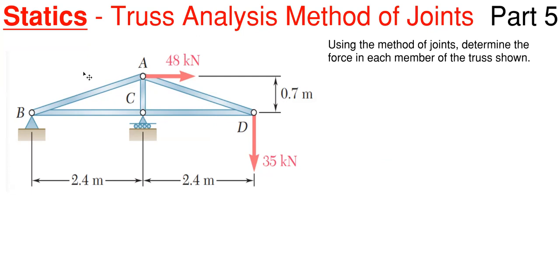We are going to be working with solving each of the members shown on this truss. The first thing you want to do when you're using method of joints is that you want to solve for the reactions of the truss if they are not given to you.